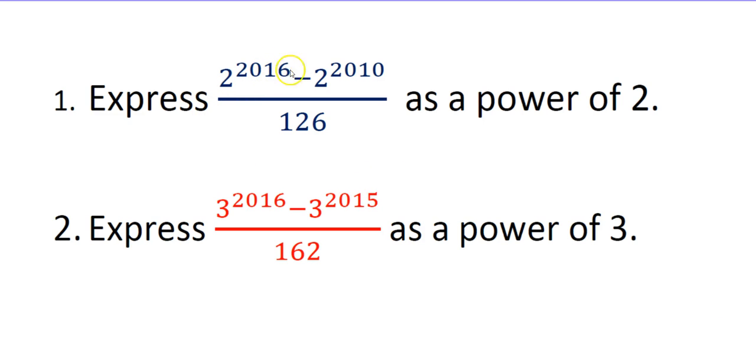The first one is 2 to the power of 2016 minus 2 to the power of 2010 divided by 126. Express it as a power of 2. And in the next problem, it is expressed as a power of 3. Everything is same, just we change some denominator, those numbers, but you should be able to figure out.